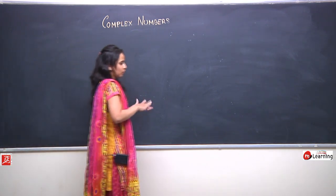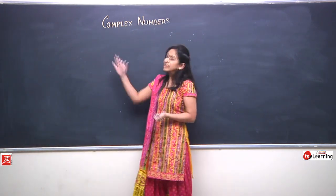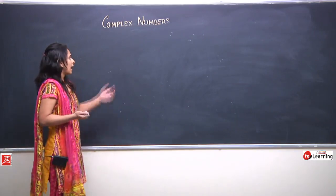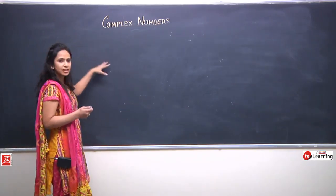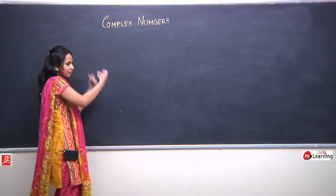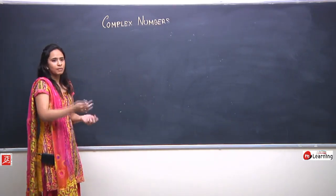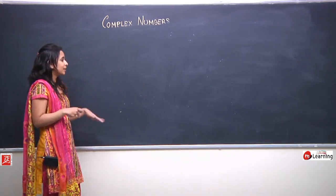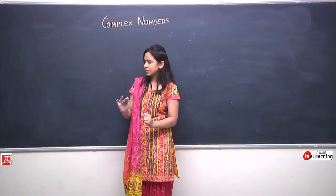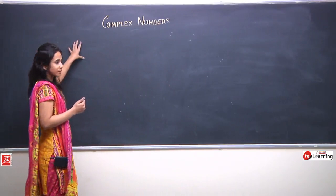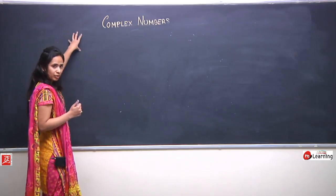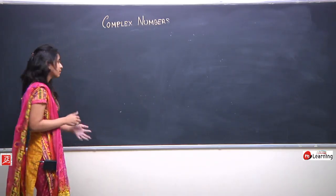So, till now we started with the introduction of complex numbers. We saw why we required this number system and how we define the rules and structures for defining a complex number — first defining the set, then the structure, and the operations. We also saw that complex numbers are an extension of the real number system, so all properties of real numbers hold within complex numbers as well.